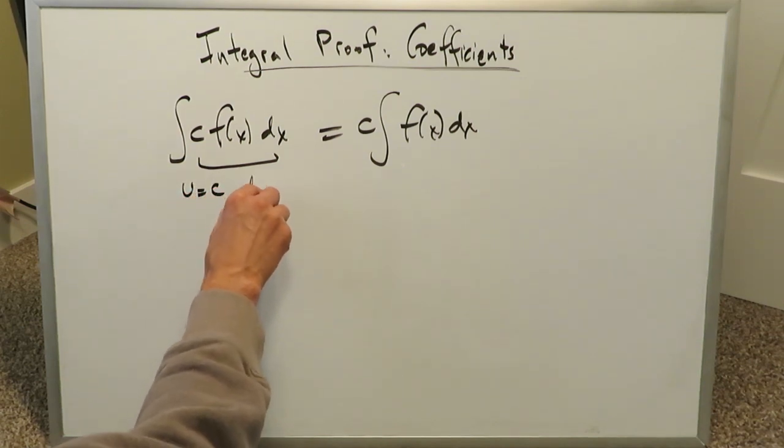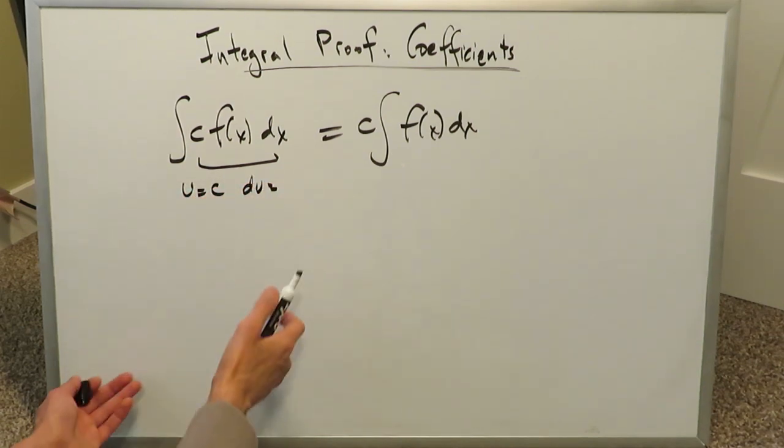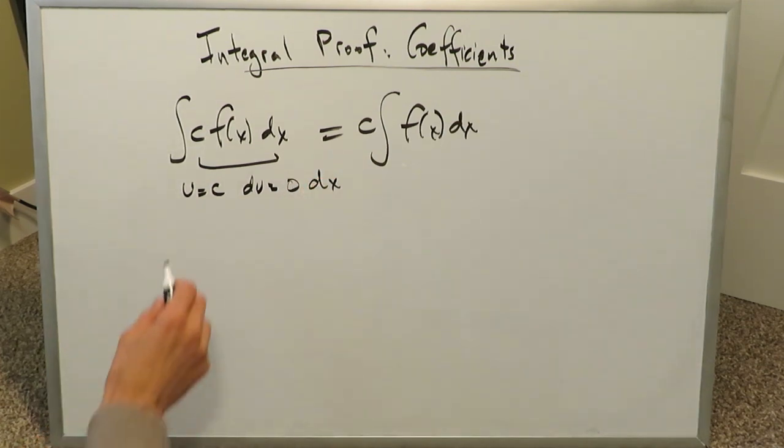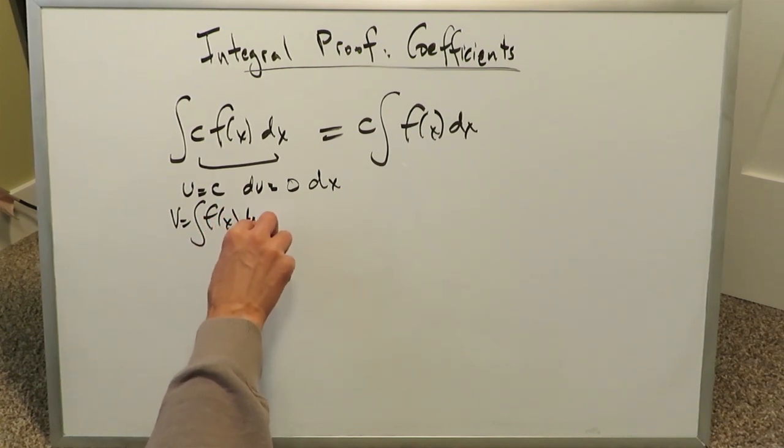If u is equal to c, du is equal to - what's the derivative of a constant? It's always zero, and then let's put that dx. V is the integral of what remains, which is your function f of x dx.